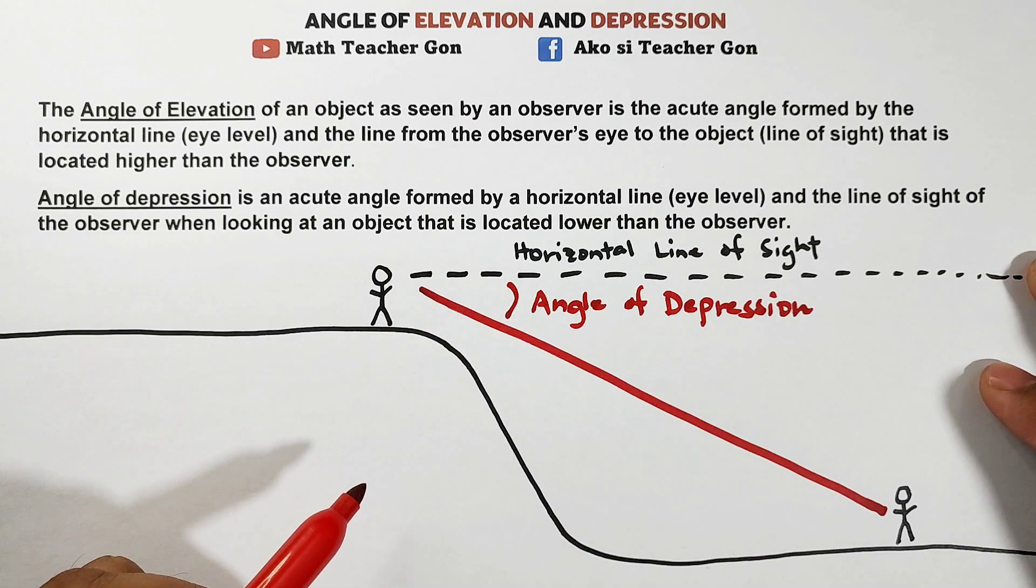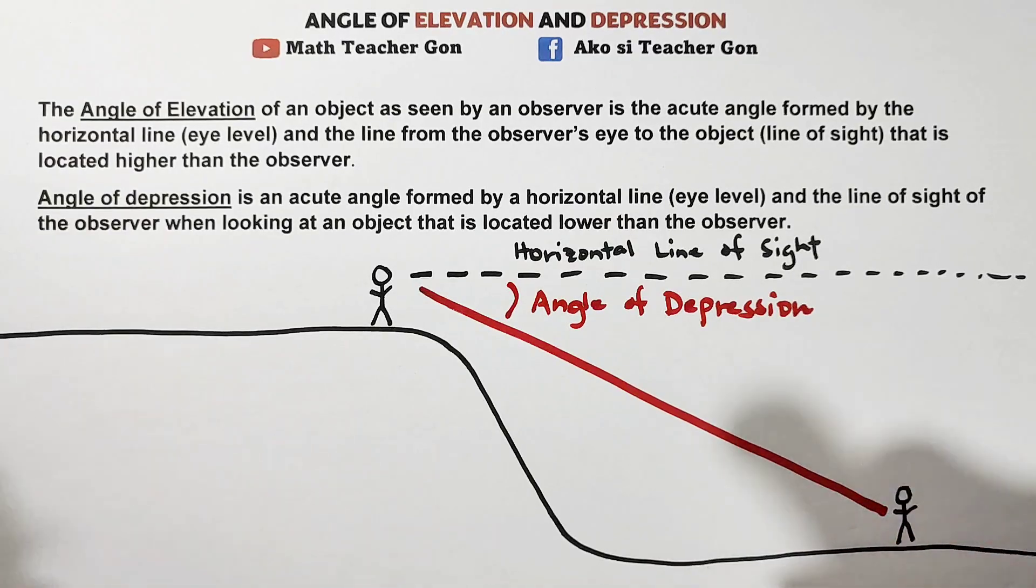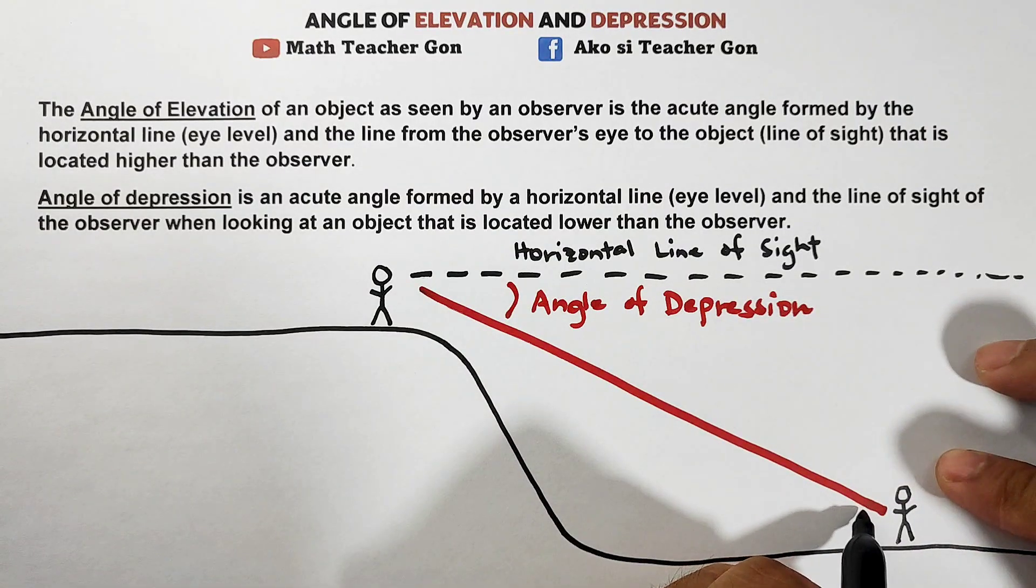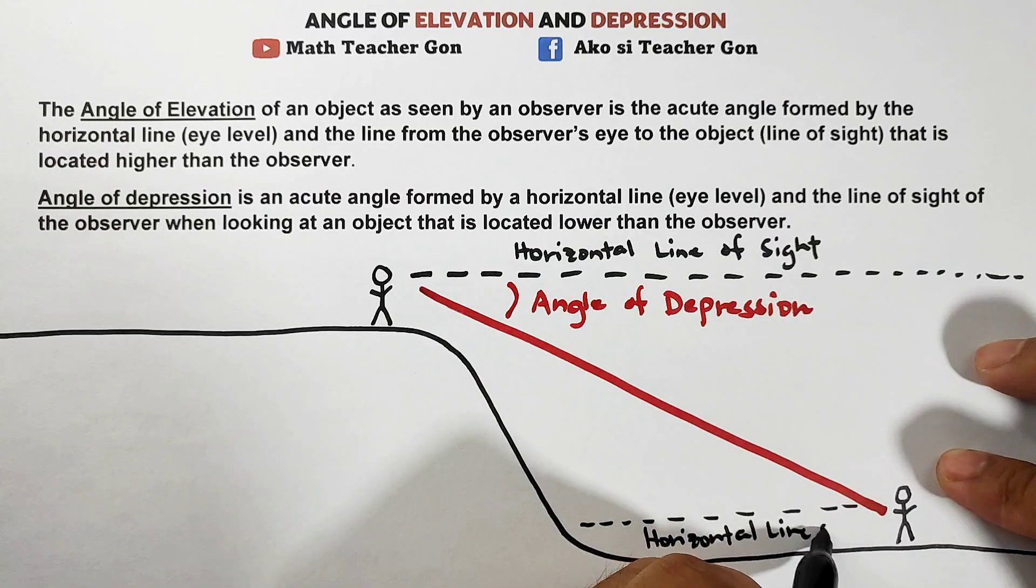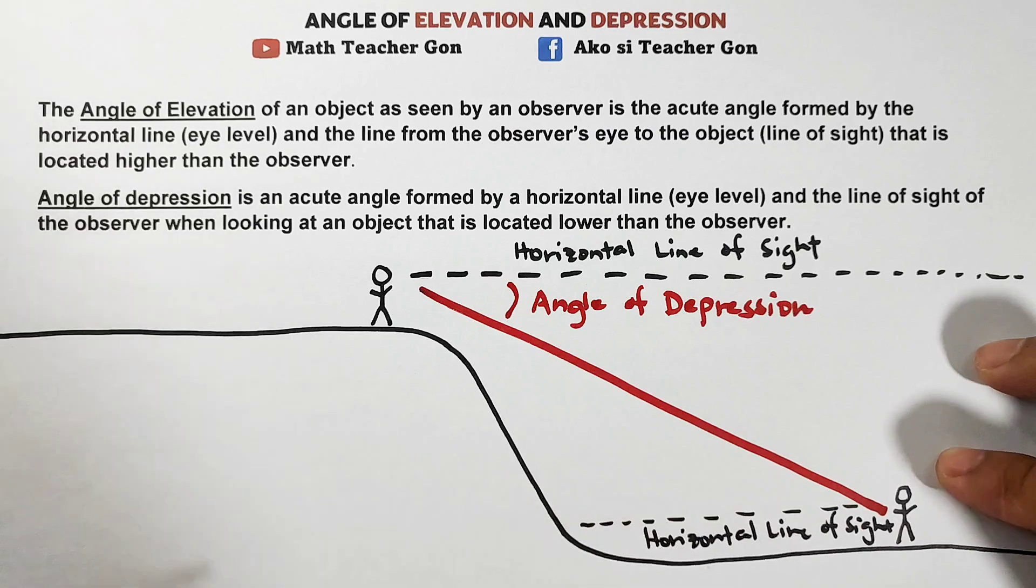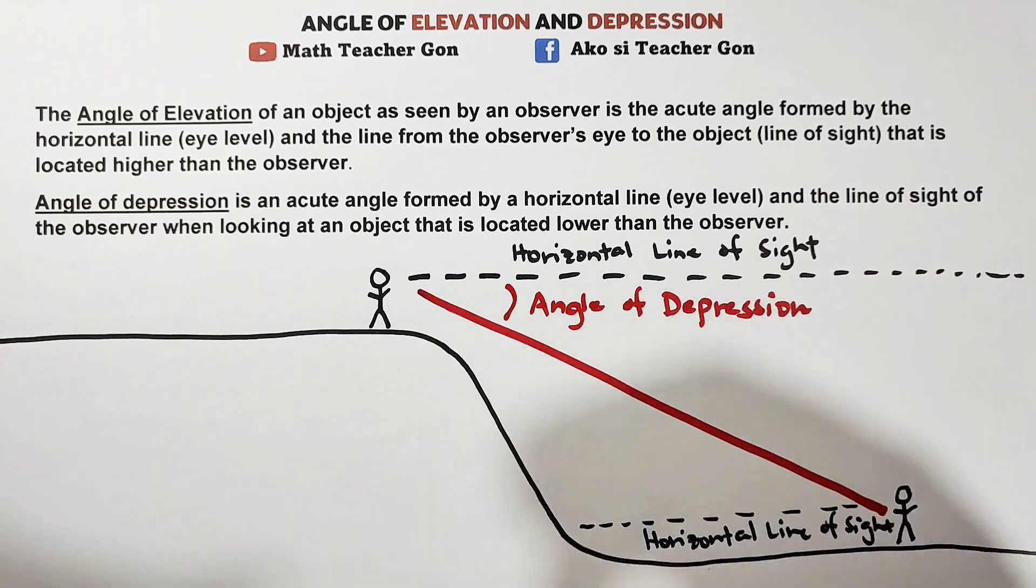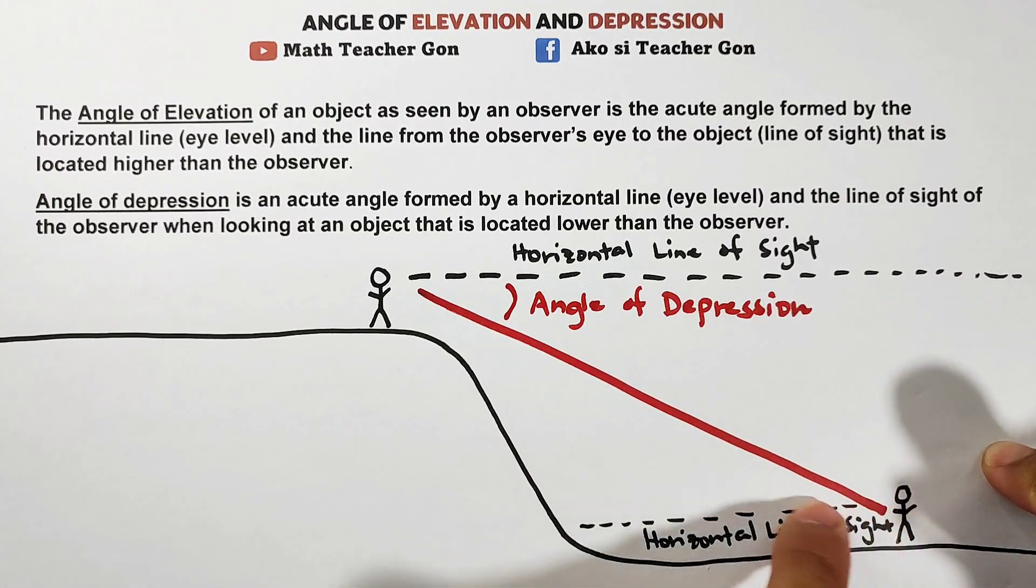Next, what about the angle of elevation? If we focus on this person, they also have a line of sight, a horizontal line of sight. Where is the angle of elevation? This angle of elevation is between the horizontal line of sight and when this person sees the person on the uphill.